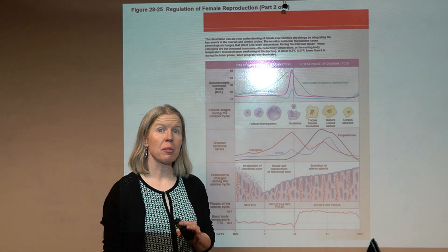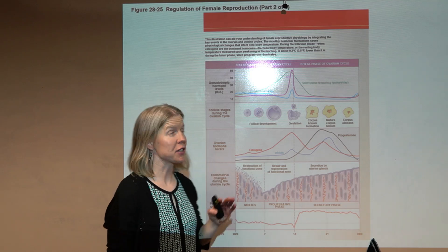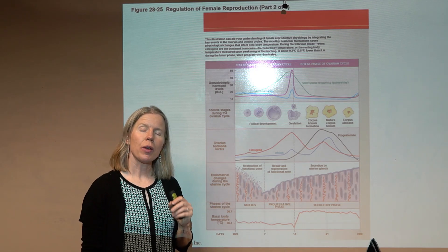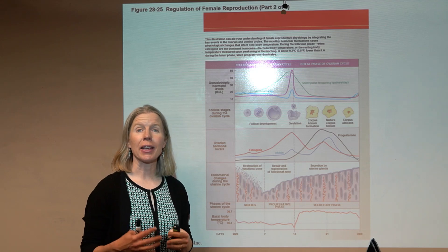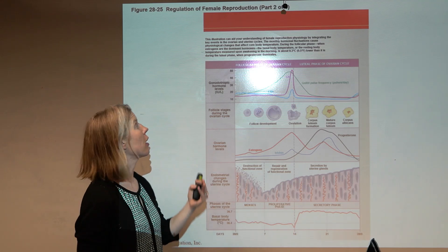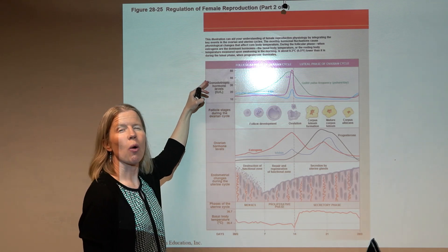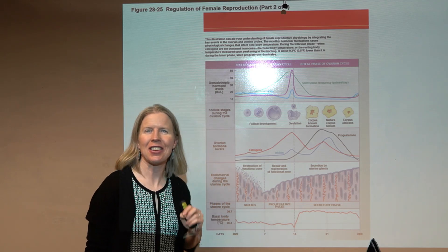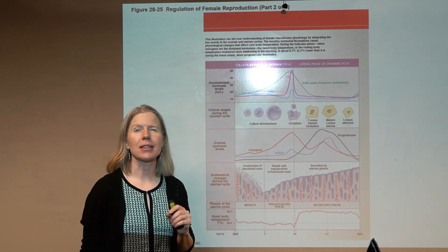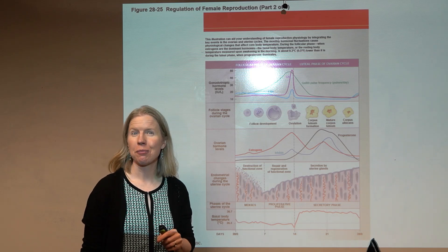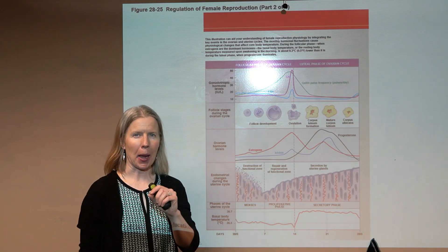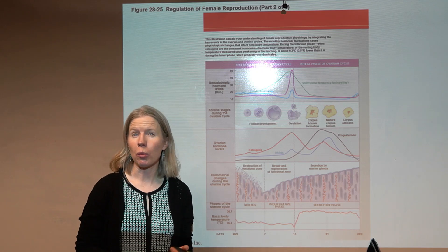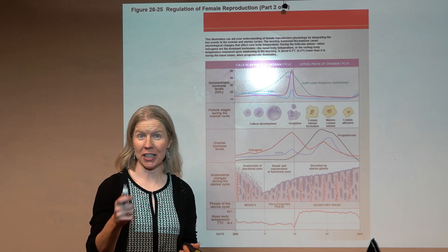To wrap up the female reproductive system, we're going to put it all together. When we think about the regulation of the female reproductive system, we go all the way back to the endocrine system — back to the hypothalamus. The hypothalamus is releasing hormones called gonadotropin releasing hormone.